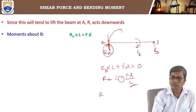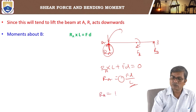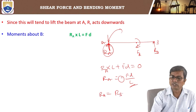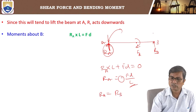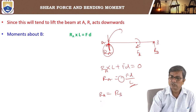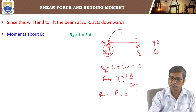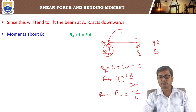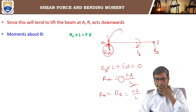For vertical equilibrium, RA must equal RB. RA is downwards and RB is upwards, so for equilibrium these two must be equal. Therefore RB is also equal to Fd by L.